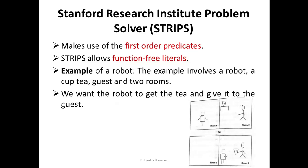STRIPS uses first-order predicates alone — it does not support quantifiers and does not support functions. It allows only function-free literals. Only when a scenario can be expressed within these constraints can we implement it in STRIPS. The first robot ever designed had its planning implemented using the STRIPS language.